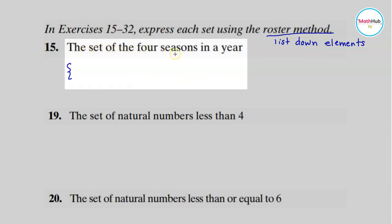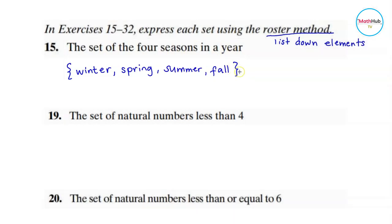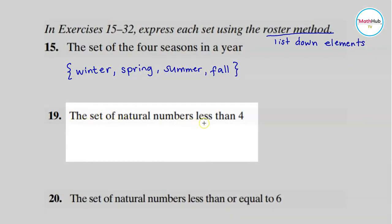For number 15, it is the set of the four seasons in a year. So what are the four seasons in a year? We have winter, then separated with a comma, spring, and then summer, and fall. Enclose it in braces.